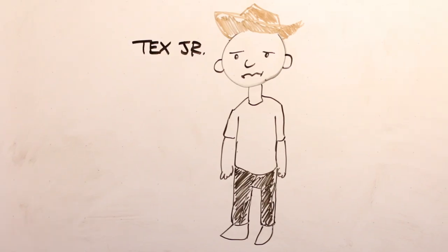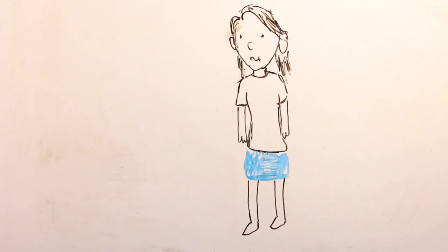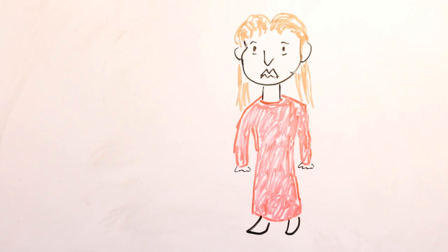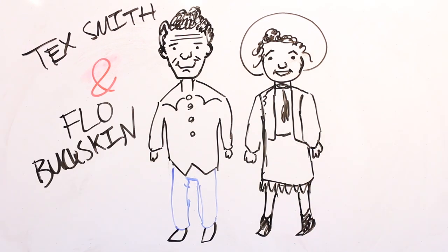In my family were my brother, Tex Junior, who later changed his name to James because he hated our dad. My sister, Fern, who changed her name to Joy. And my sister, Barbara. And of course, my parents, Tex Smith and Flo Buckskin.